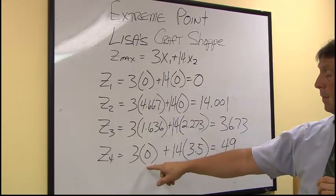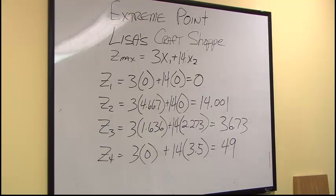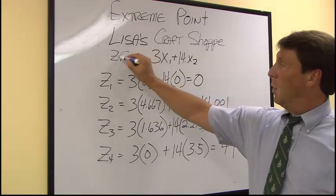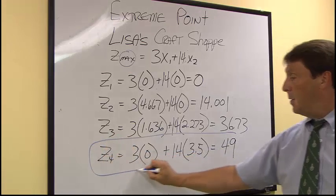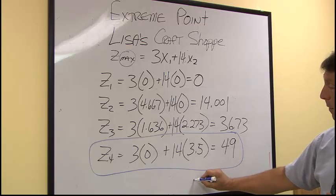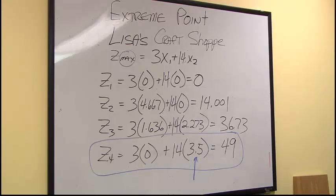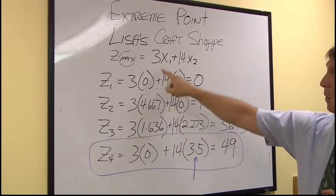In this case, we know that our objective function is to maximize. So we want to maximize profit. So the one with the highest profit is our z4 point, which is the x2 intercept. We know we want to make 3.5 units of x2, and zero units of x1.